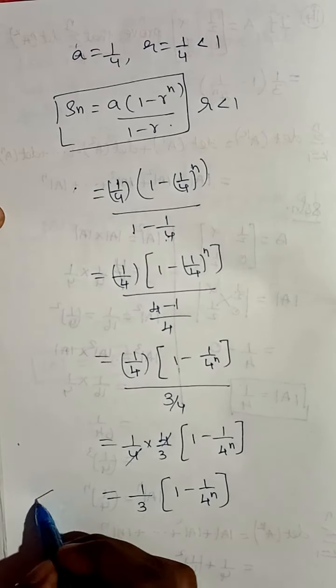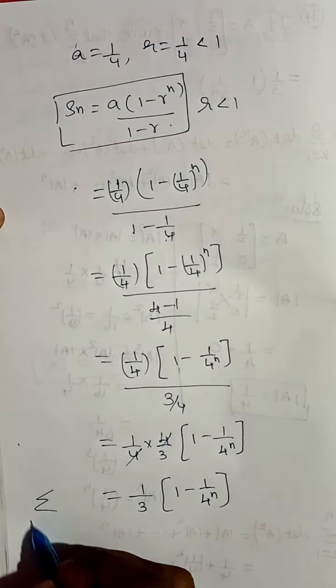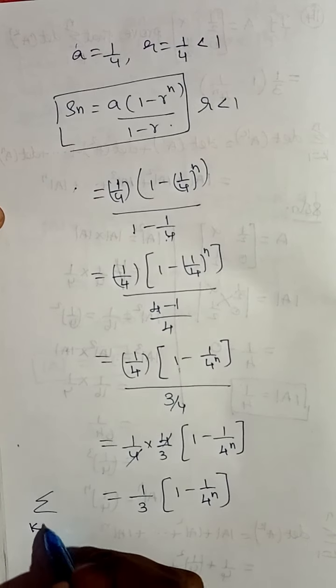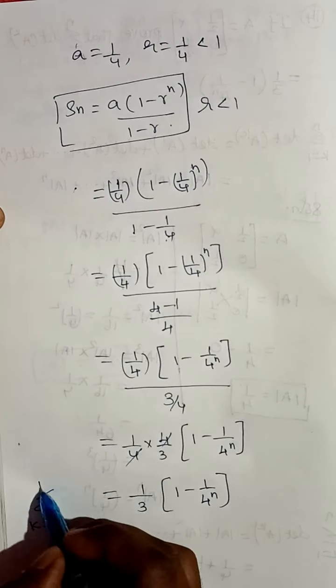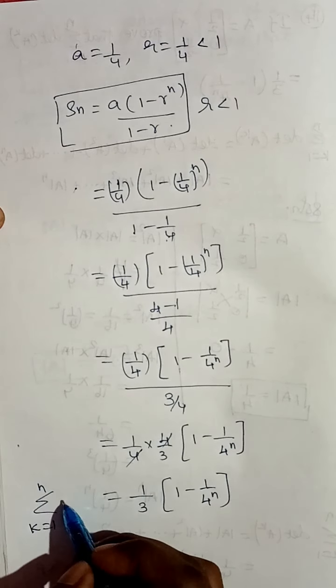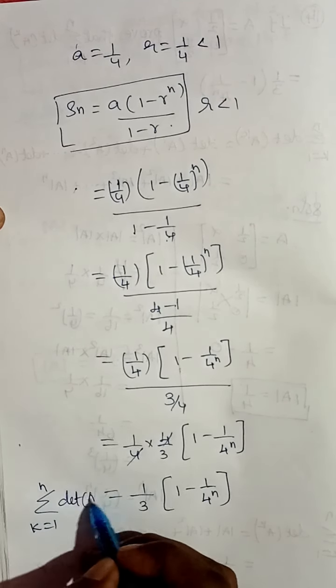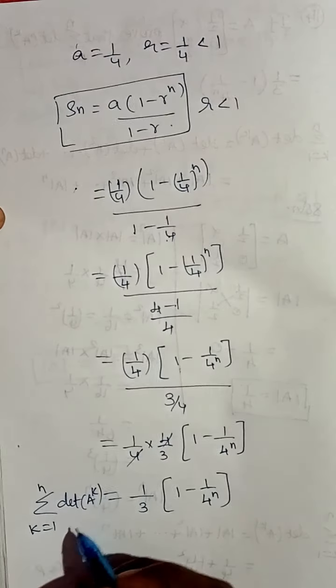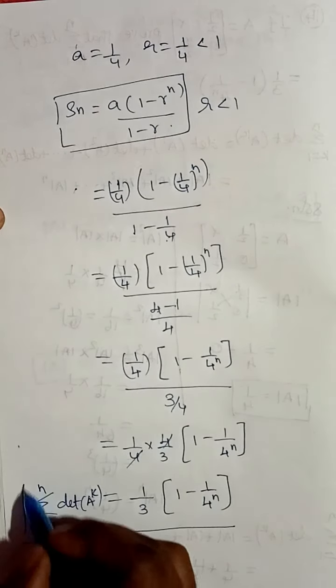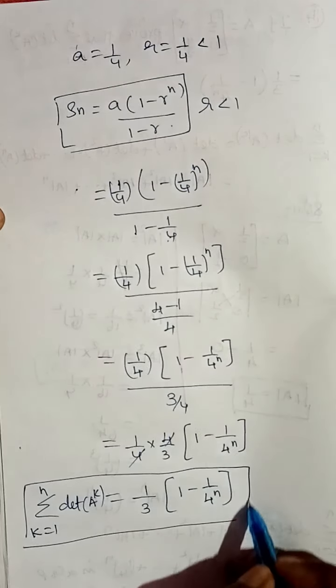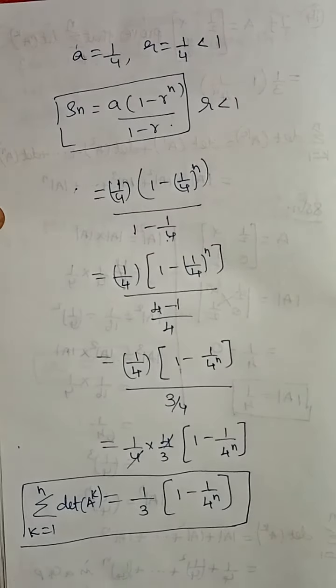So summation k equal to 1 to n of determinant of A power k equals 1/3 into (1 - 1/4^n). This is the proof. Thank you, children.